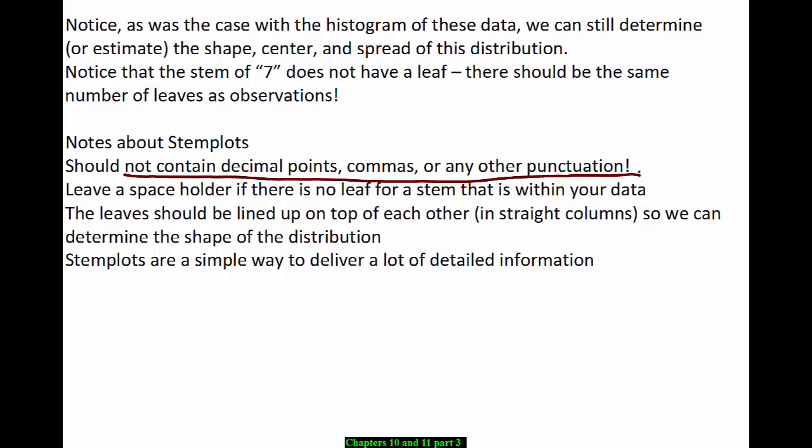Leave a spaceholder if there is no leaf for a stem that is within your data. This was the case with our 7 bar nothing, where we didn't have an observation in the 7's. We left a spaceholder. The leaves should be lined up on top of each other in straight columns so we can determine the shape of the distribution, just like as done in our example stem plot.